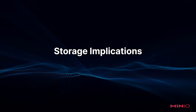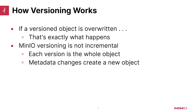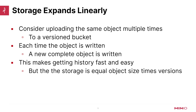When you have versioning turned on, there are some implications for the amount of storage it's going to take. The way versioning works is if you upload a new version of an object, there is no incremental versioning in MinIO — each version is the whole object. This makes it very easy and fast to go back and pull earlier versions, but it also means your storage is going to expand linearly. Each time the object is written, the new complete object is written, so your storage is equal to the object size times the number of versions.